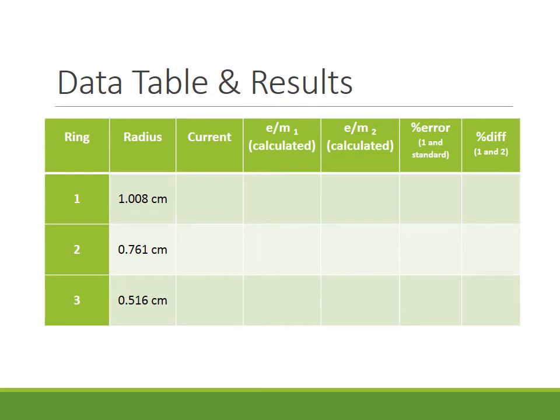So here's the data table that we'll use. For each of the three rings that we looked at, the radius of each ring is known and is recorded. Now if you don't have data of your own, I've included in the table the currents for each ring that caused the electron beam to bend into that particular radius.